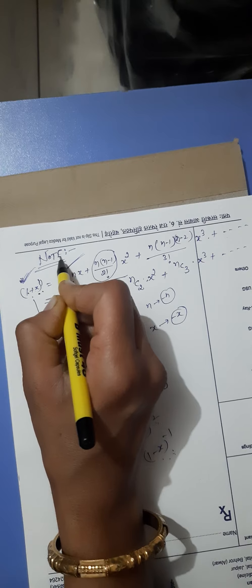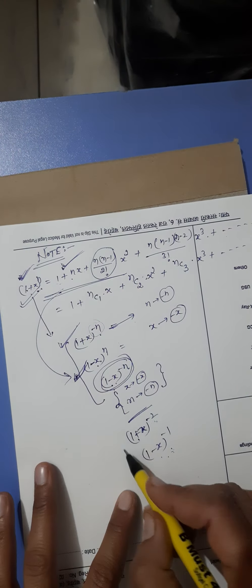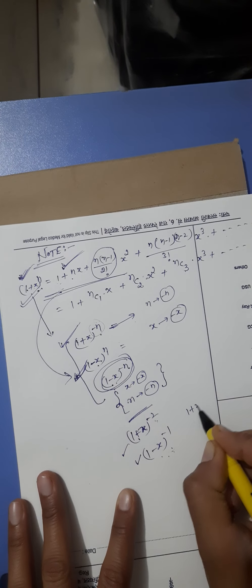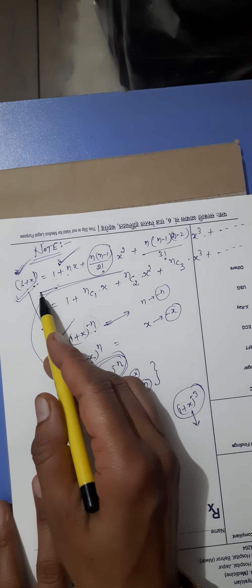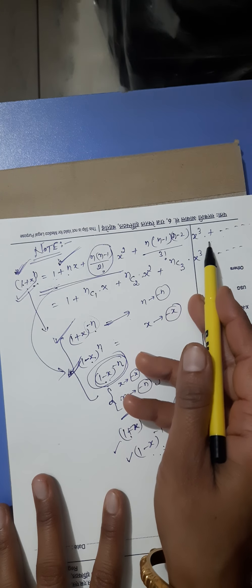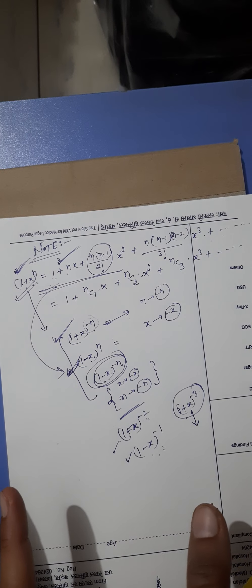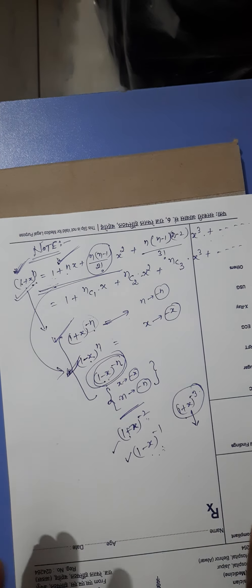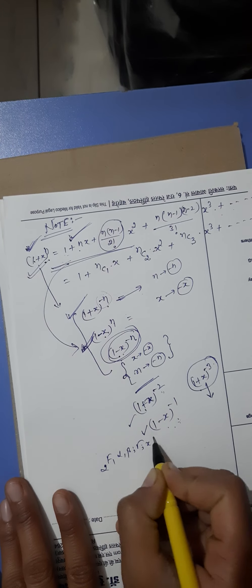Note down all these expansion formulas in your register because questions will come based on them. Terms like (1+x)^(-3) will appear and you need to know how to expand them. This expansion formula topic is directly related to our subject, so it must be clear. Next, our very important topic is the integral representation of the hypergeometric function 2F1(α, β; γ; x).